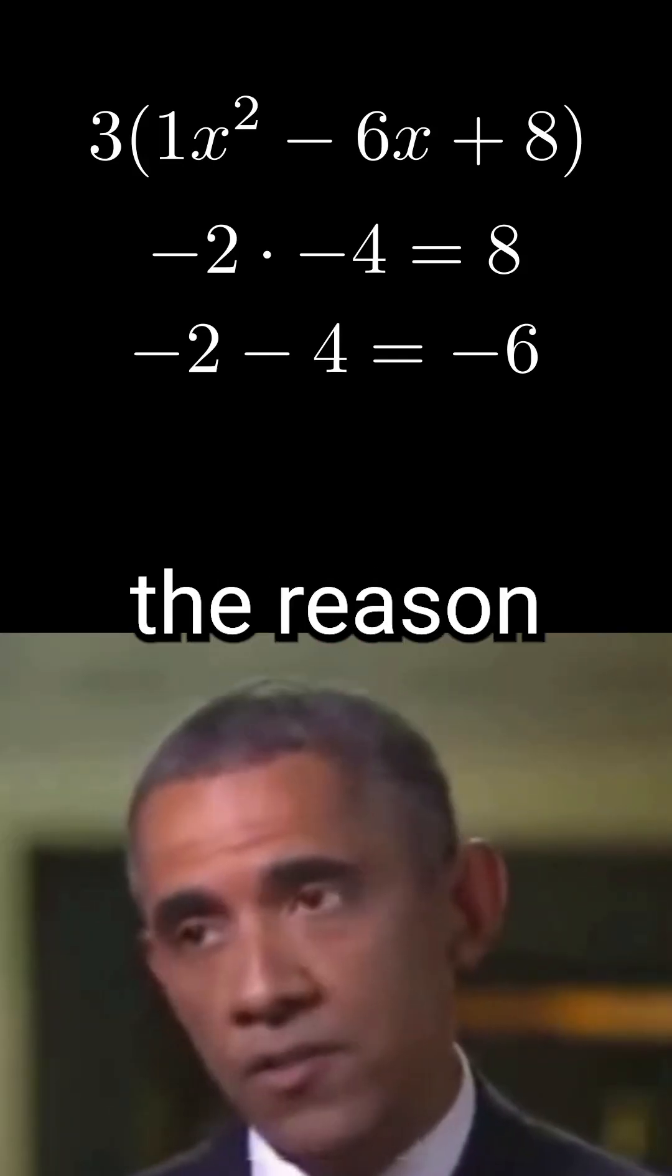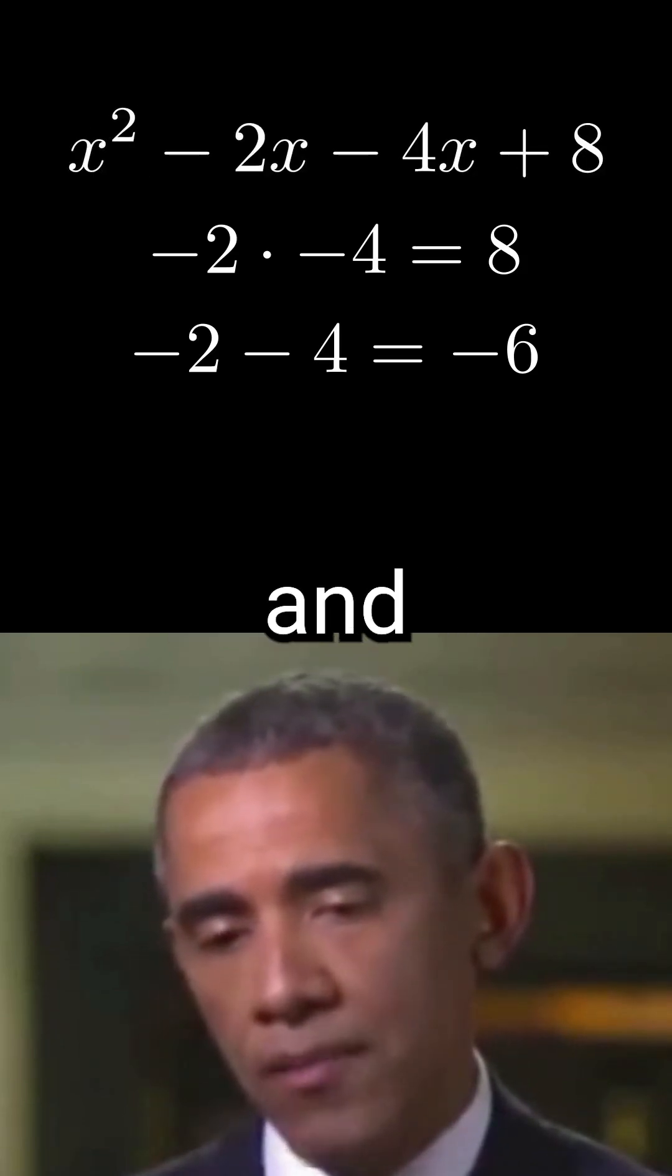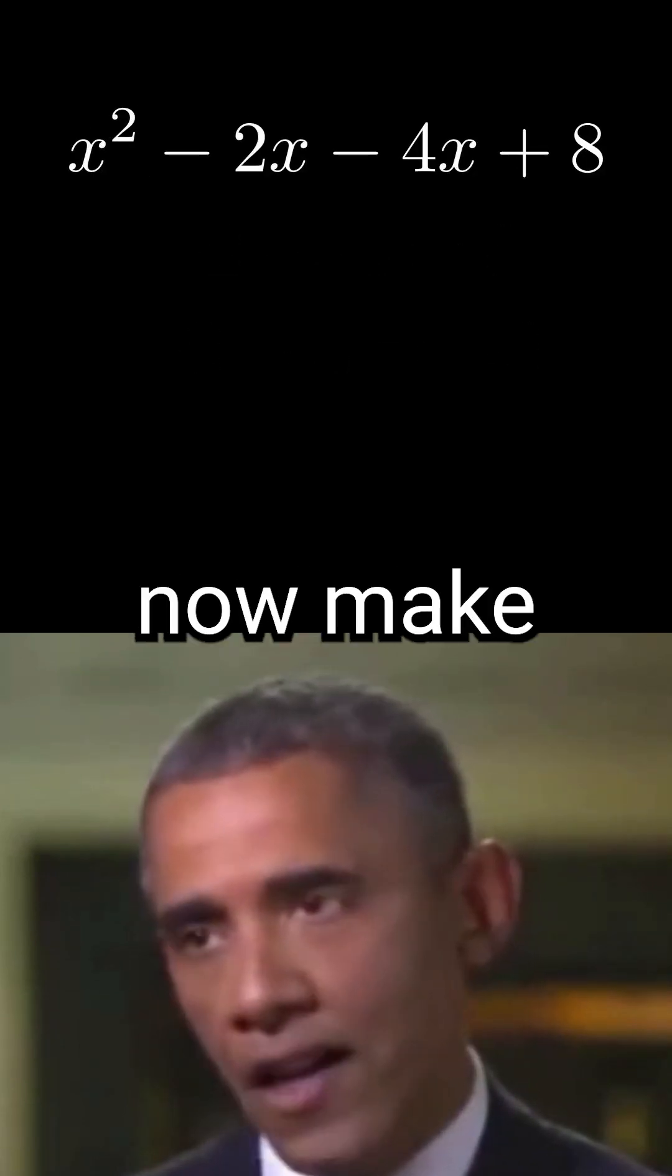That's right, Joe. Now the reason we did that whole process is because we can now rewrite this middle term as the sum of negative 2x and negative 4x. With this, we can now make two groups.